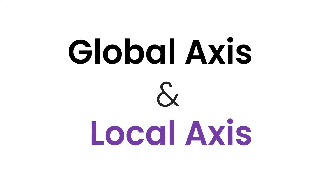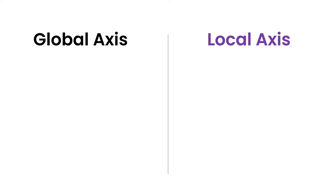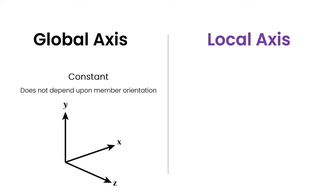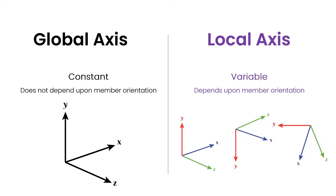The primary difference between the global and the local access boils down to one simple thing. The global access is going to be constant for your structure — it will not depend upon any member orientation. However, when it comes to local access, the local access will be variable across the members. Every member will have its own local access and it will depend upon how the member is oriented.